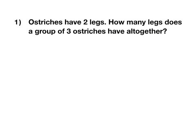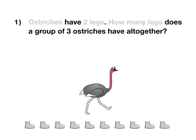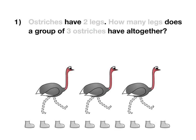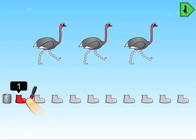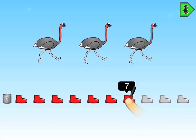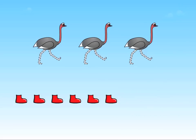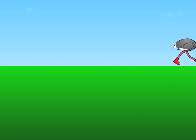In the software, this multiplication problem — ostriches have two legs, how many legs does a group of three ostriches have altogether — becomes a puzzle where all of the key elements are presented entirely visually. Students see and solve a highly interactive game where they choose the number of boots needed by all three ostriches, and Gigi is able to cross the screen.